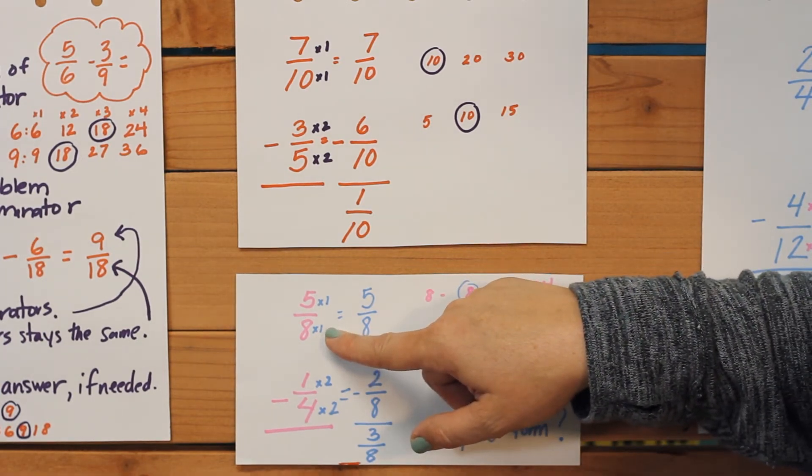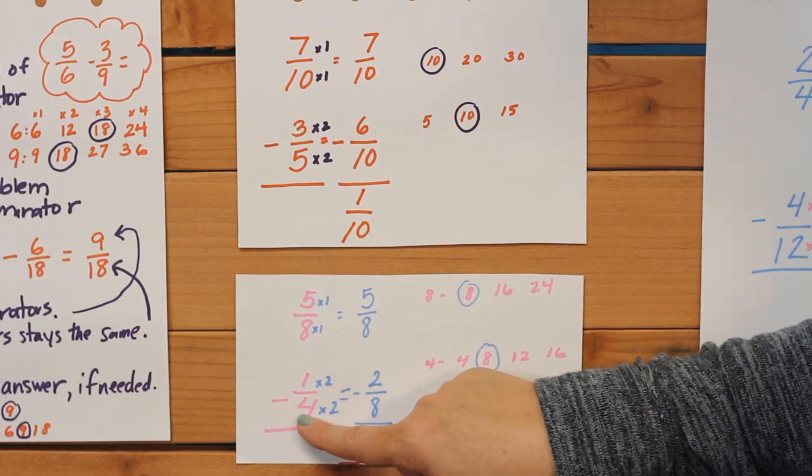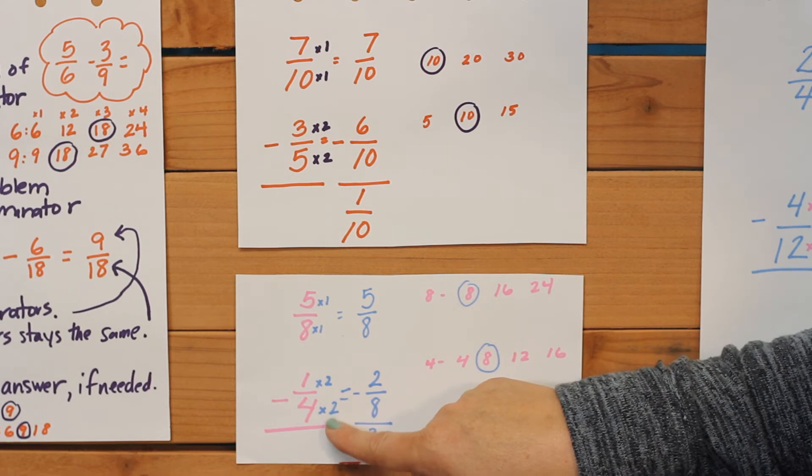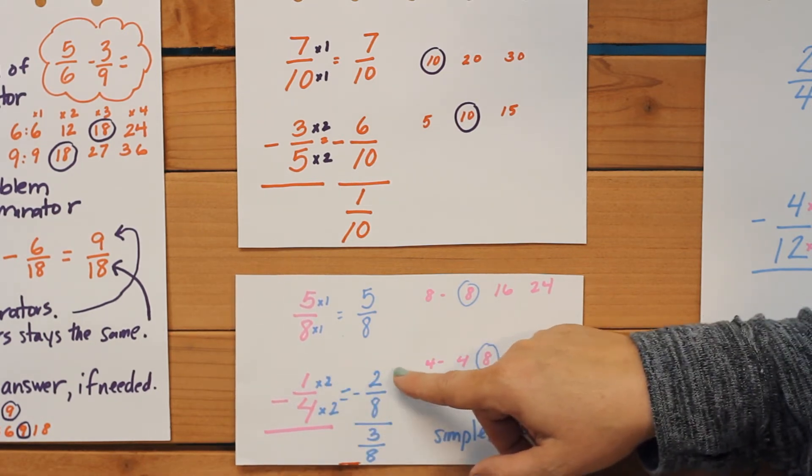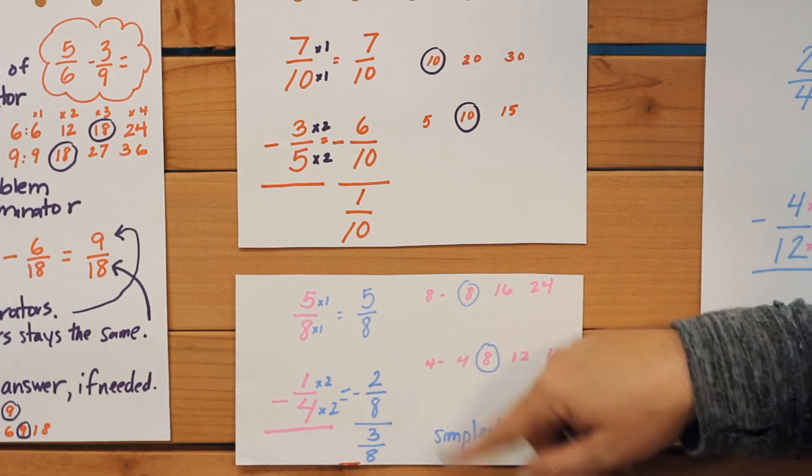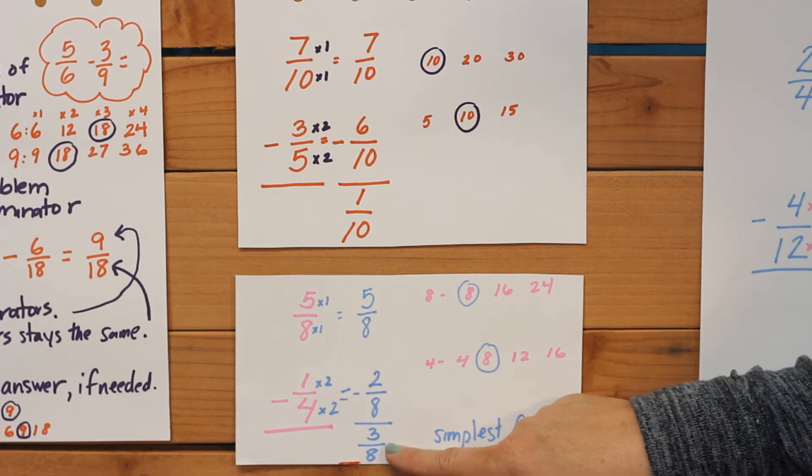This one is already changed, so it stays the same. So we just have to see how many times does four go into eight? That's two times, so we change that to eight, and we multiply the numerator one times two. So now we have 2/8. So now we can subtract 5/8 minus 2/8, give us 3/8.